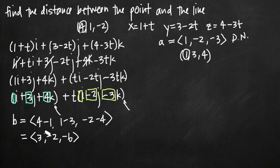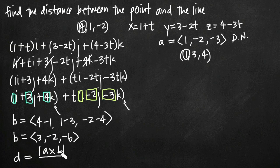Now we have everything we need to find the distance between the point and the line. The distance formula we'll use is: d equals the magnitude of the cross product of a and b, divided by the magnitude of a. This formula gives us the distance between the point and the line, given that we have vectors a and b, which we've already found.